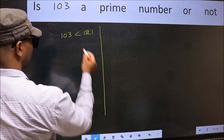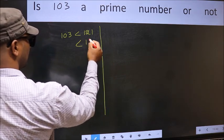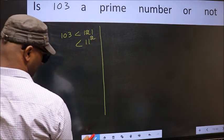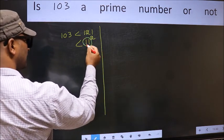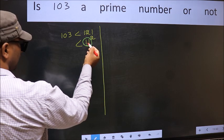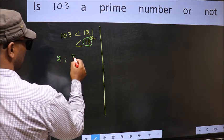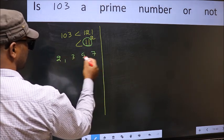121 is nothing but 11 squared. Now, you write all the prime numbers less than this number 11. They are 2, 3, 5, and 7.